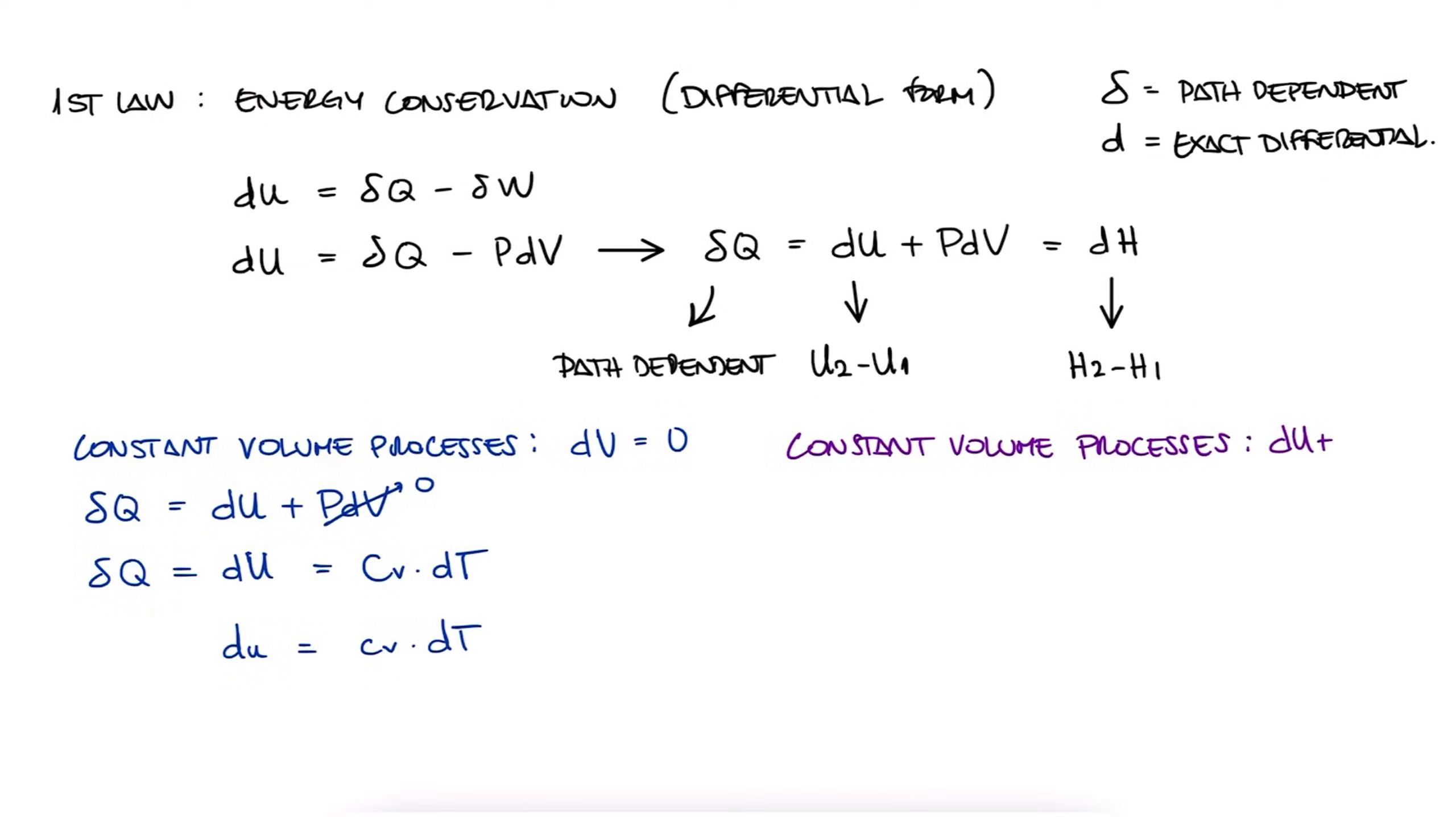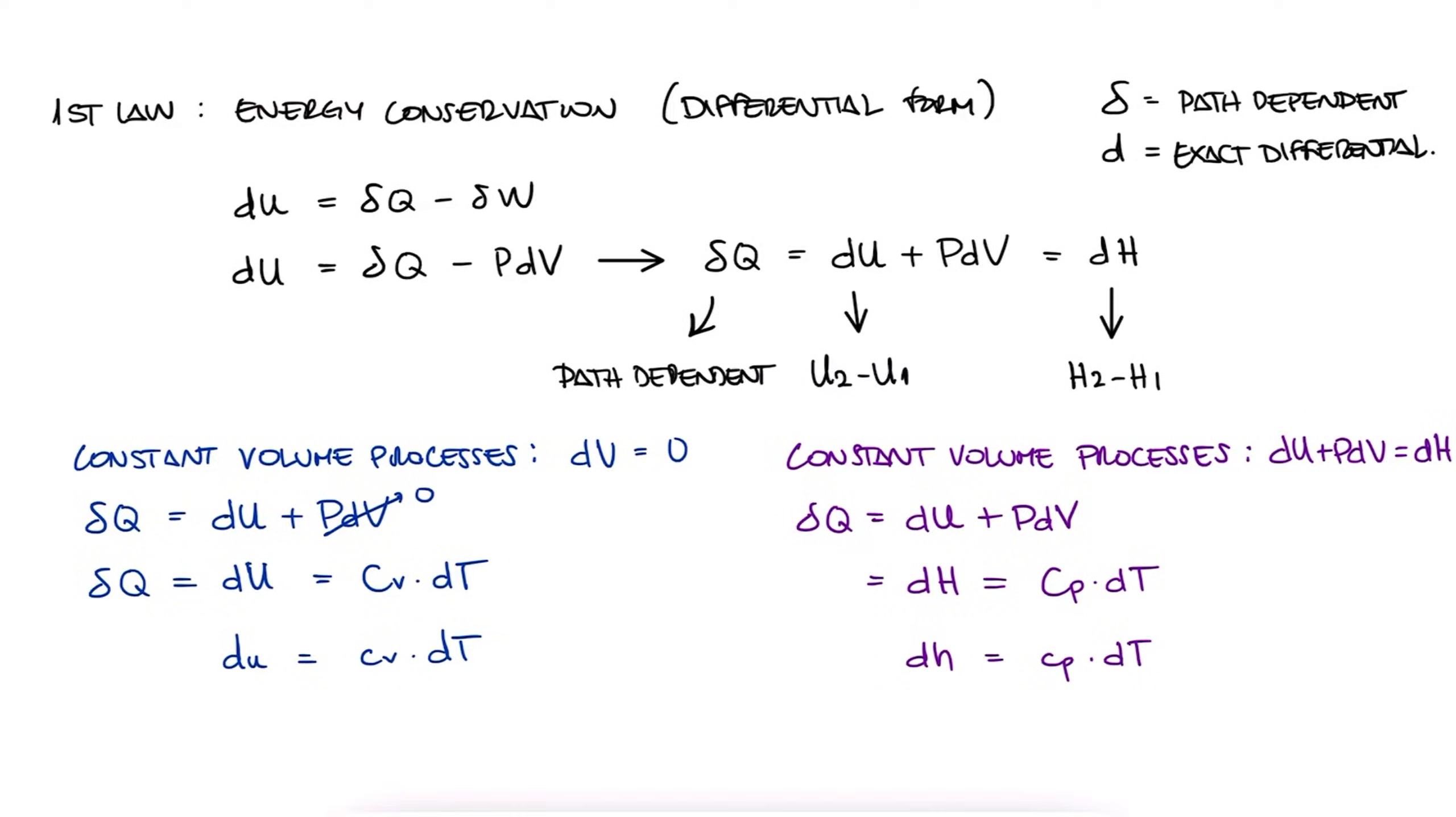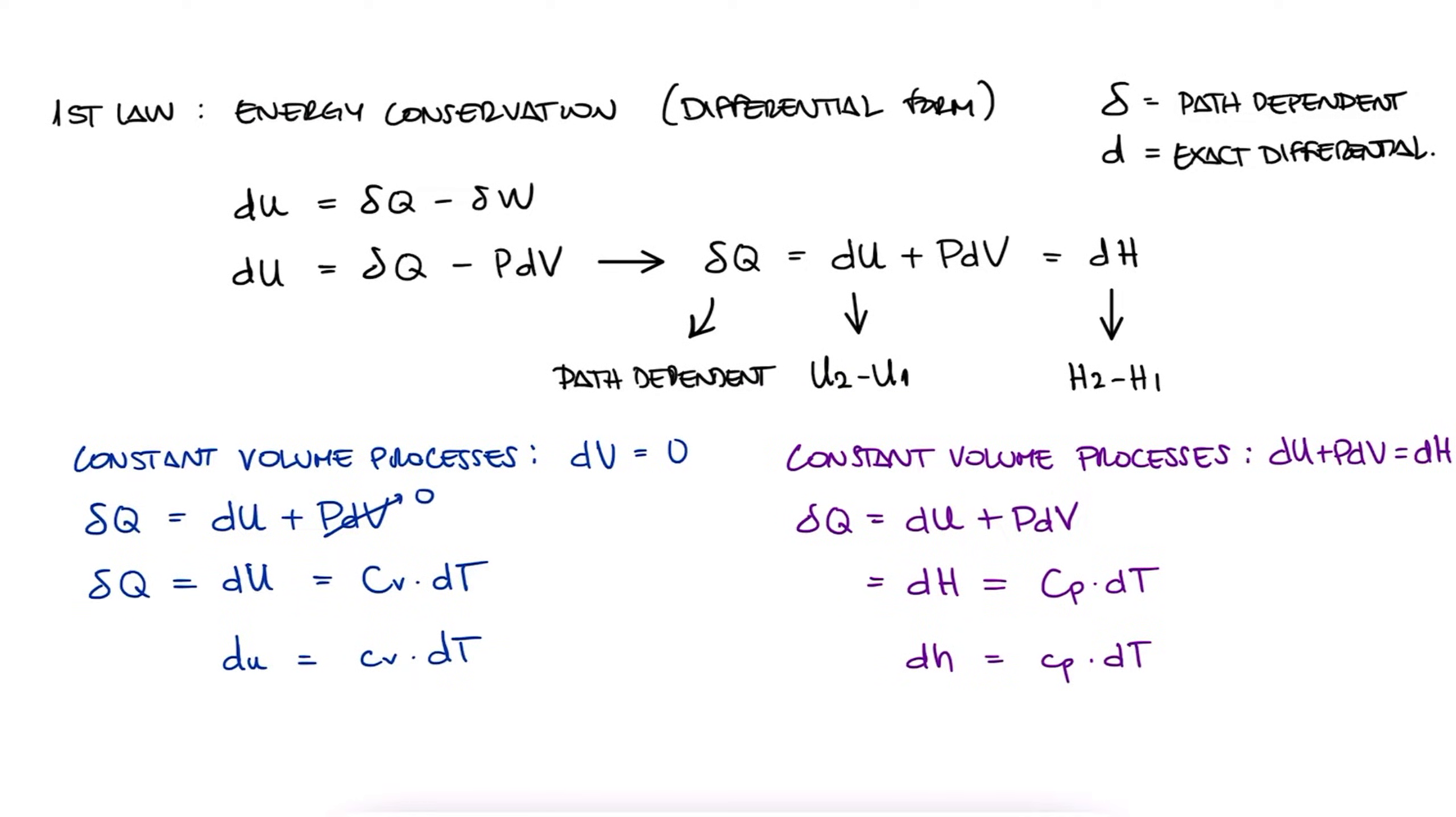With the exact same reasoning, for a constant pressure process, dh will be equal to cp dt. The first one of these tells us that the change in internal energy is dependent on the change in temperature, but what about just the internal energy, not the change, at any given state?